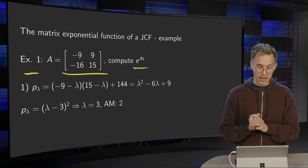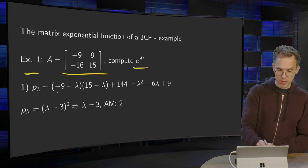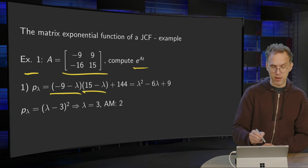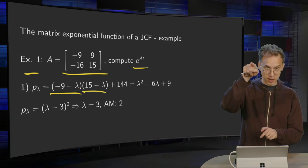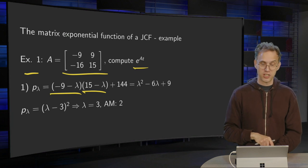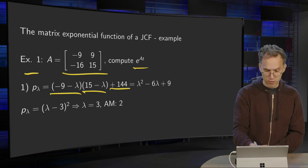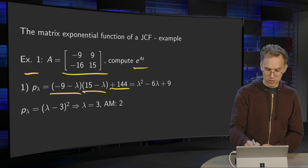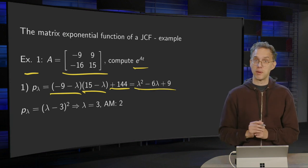So first we compute eigenvalues. So the characteristic polynomial: minus 9 minus lambda times 15 minus lambda, minus what's on the diagonal, 9 times minus 16, so plus 144. Work out the brackets. You get lambda squared minus 6 lambda plus 9.